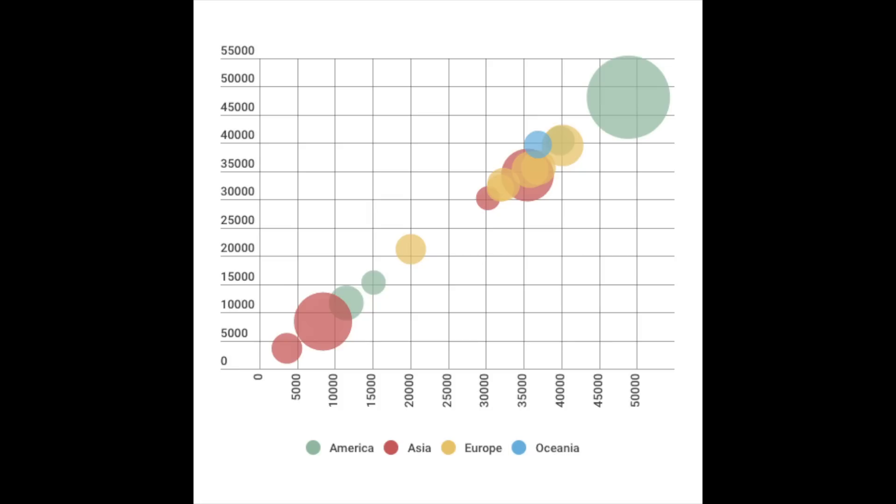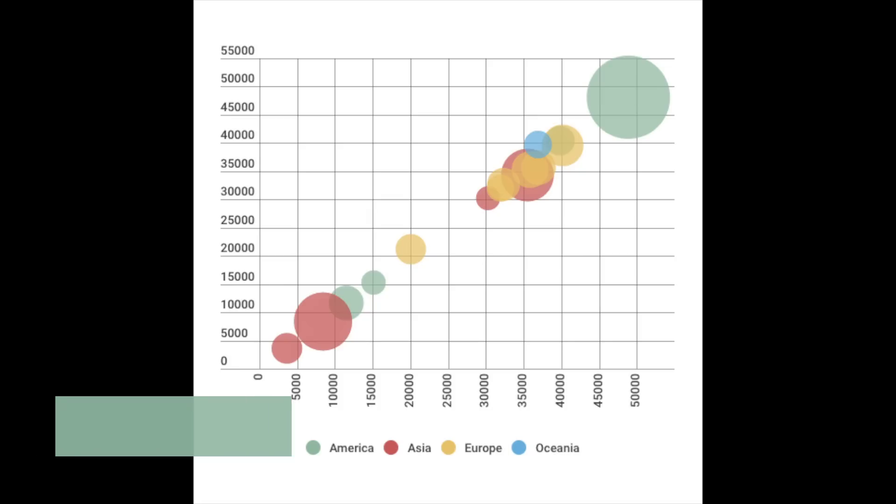If you have three variables, a bubble chart allows you to add a third dimension of dot size, similar to a scatter.